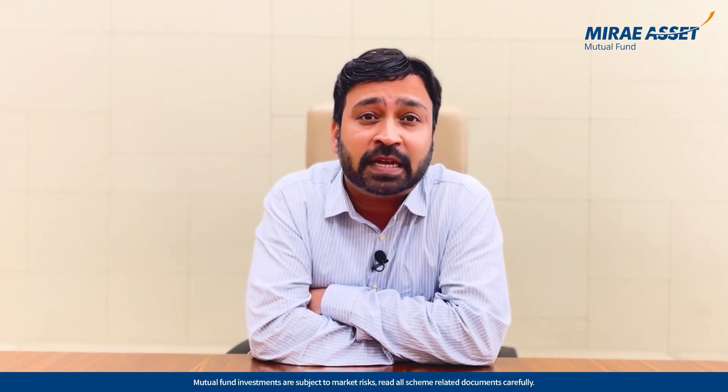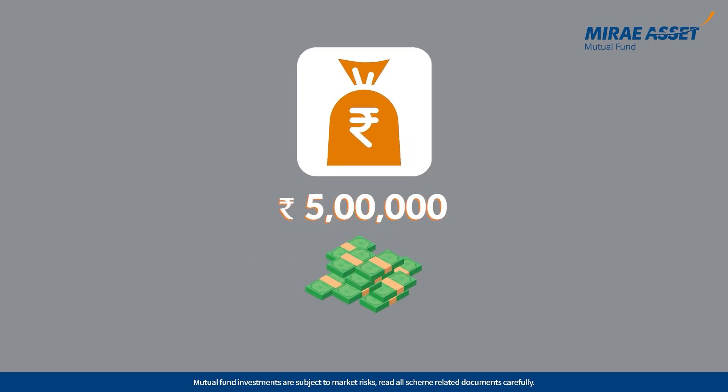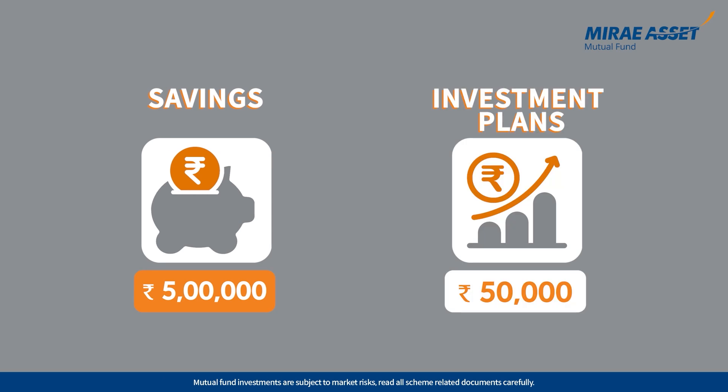Another option that allows you to average out your investment is to invest the 5 lakhs over a period of time — say you decide to invest 50,000 every month for 10 months. But take a step back and think about what is happening after the first month: rupees 50,000 has been invested in the scheme while rupees 4.5 lakhs is just lying idle in your savings account, and you are only receiving the bank's savings account interest.